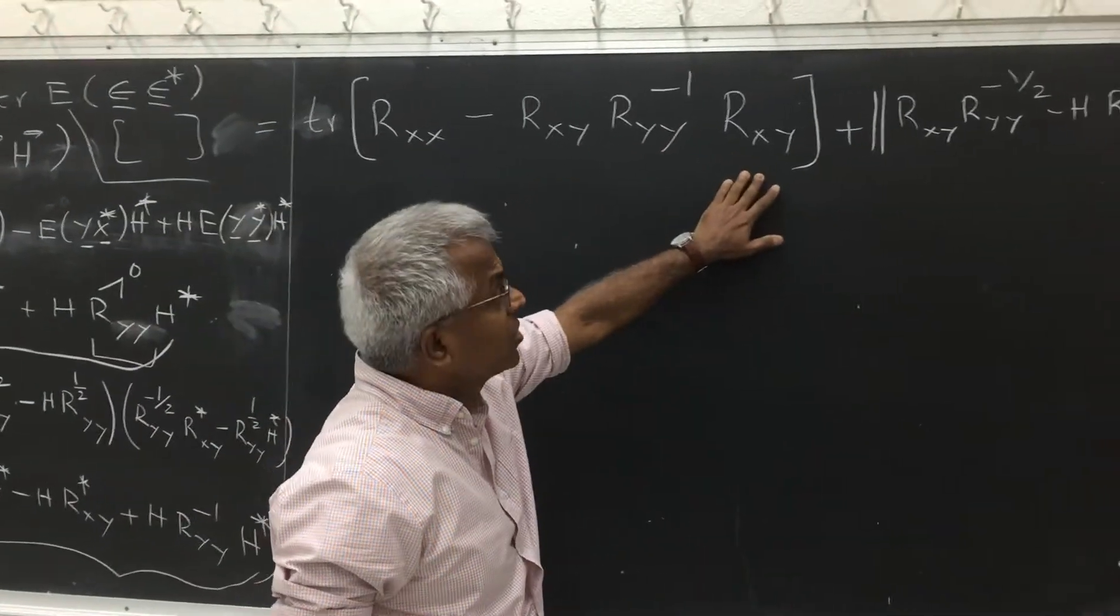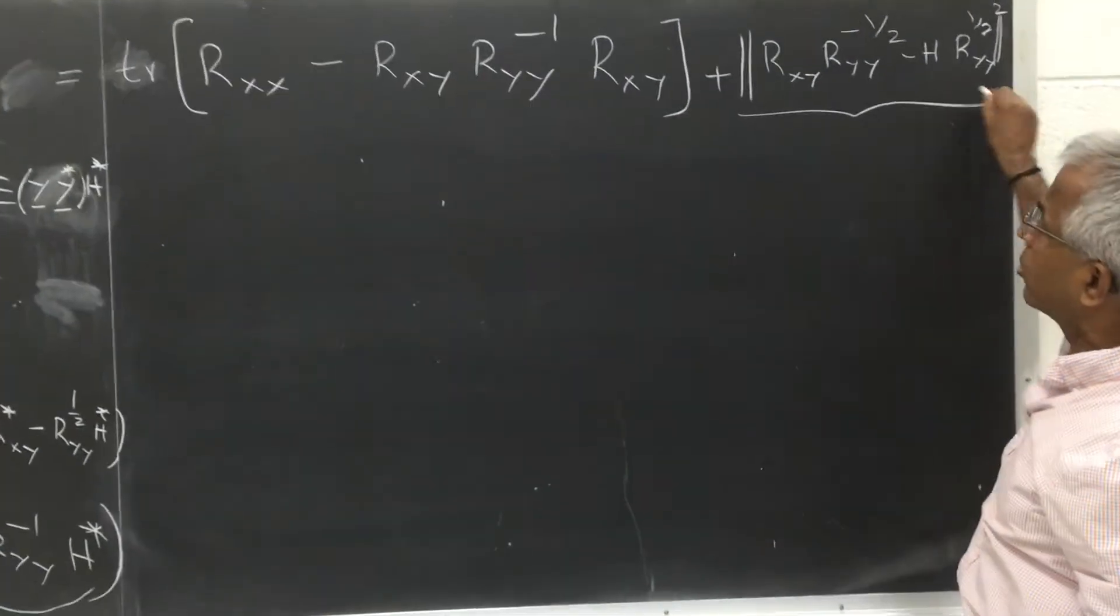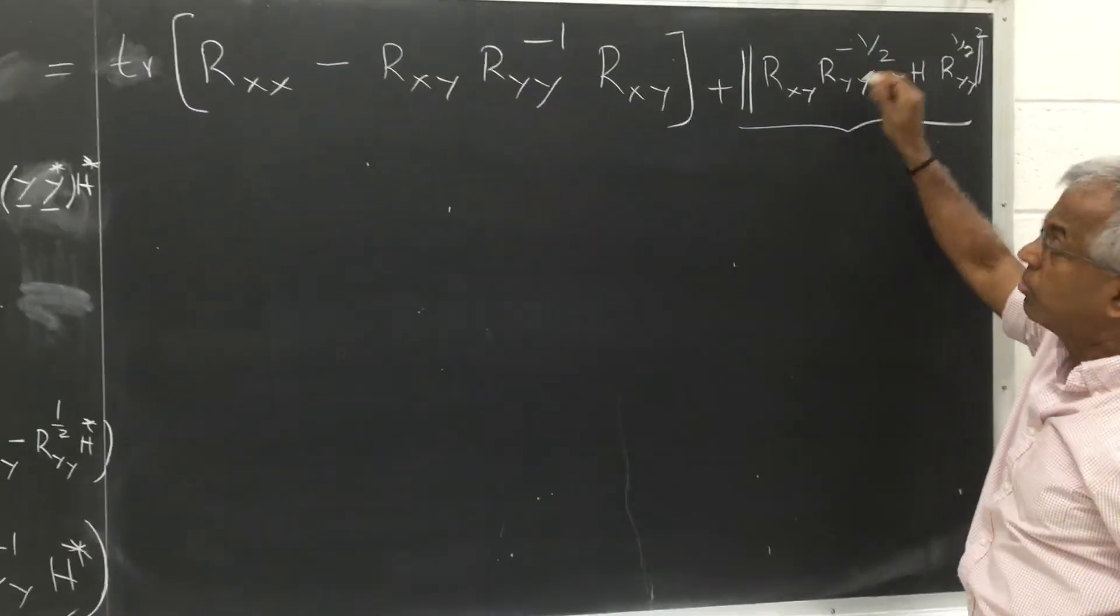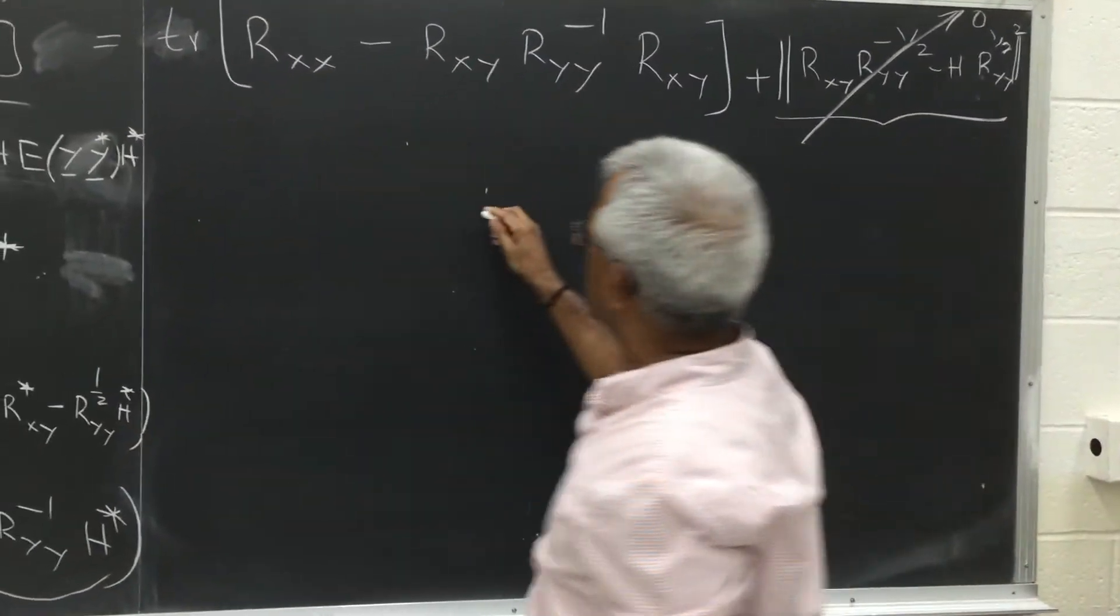Notice that there is no h here. So of course the greediest method would be, this being non-negative all the time, then the question is, can we make it equal to zero? The answer is yes.